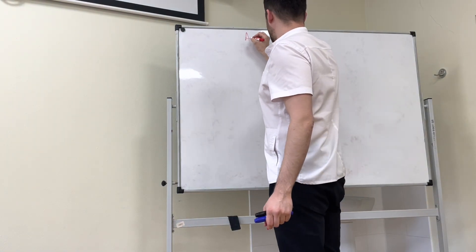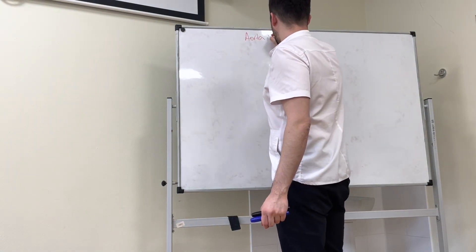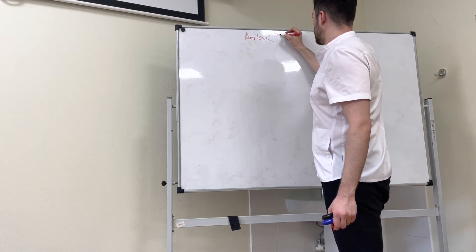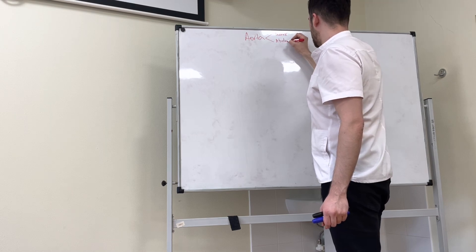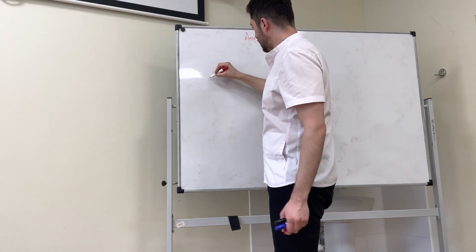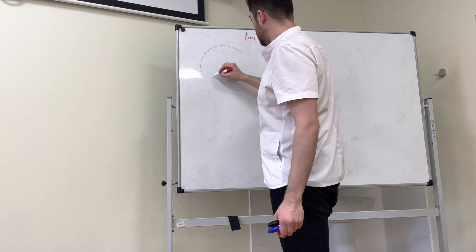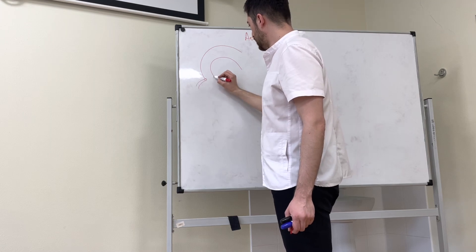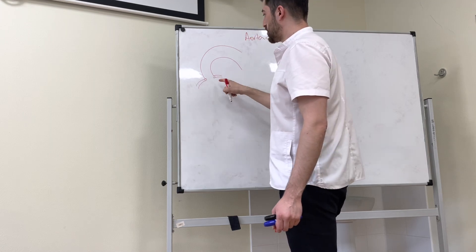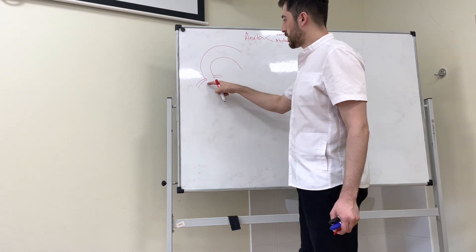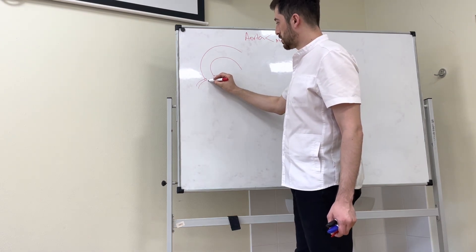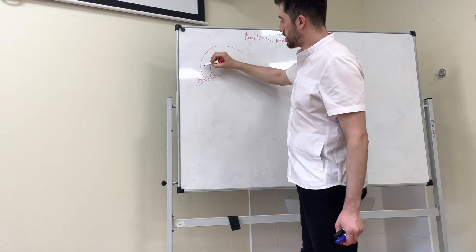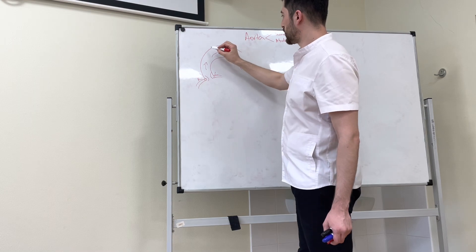We are talking about the aorta — how many parts. We are talking about the thoracic part and the abdominal part. The aorta has coronary arteries, right and left. This is the ascending portion and this is the arcus — in the arcus we have...